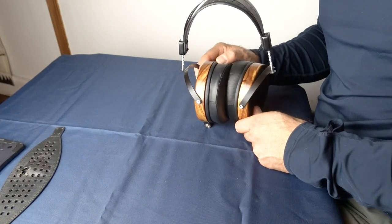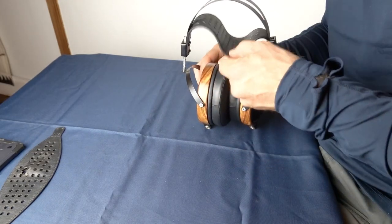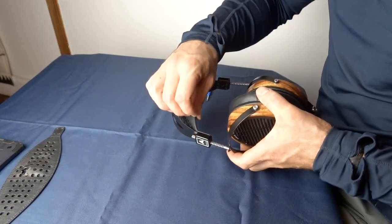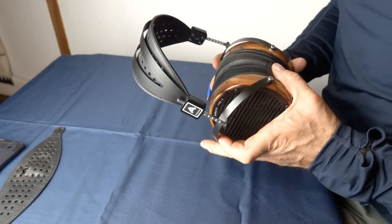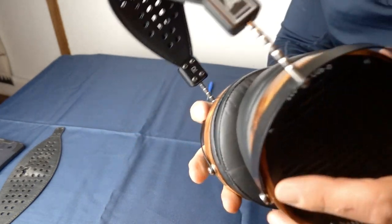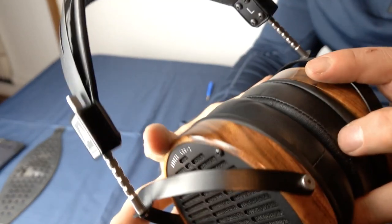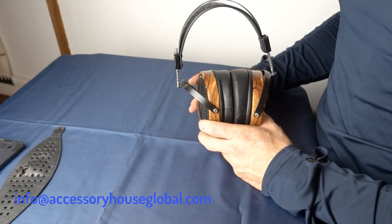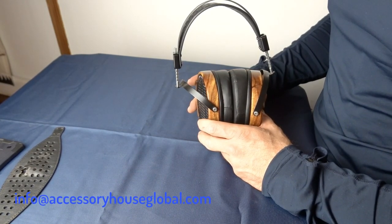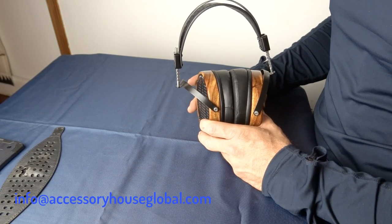And there you go - all done. Headband strap in place, it's all attached well. And you can see all the screws are in place, aligned here and there, and she's all done. So if you have any questions, feel free to drop a comment or get in touch at info at accessoryhouseglobal.com.